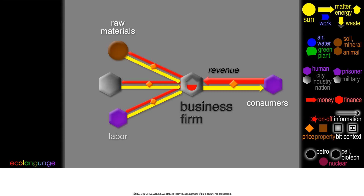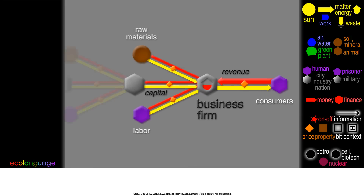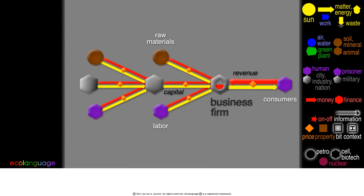The other inputs are human labor, of course, and physical capital: buildings and tools, machinery, and furniture. Physical capital comes from the capital goods industry, which itself has inputs, making a longer chain.